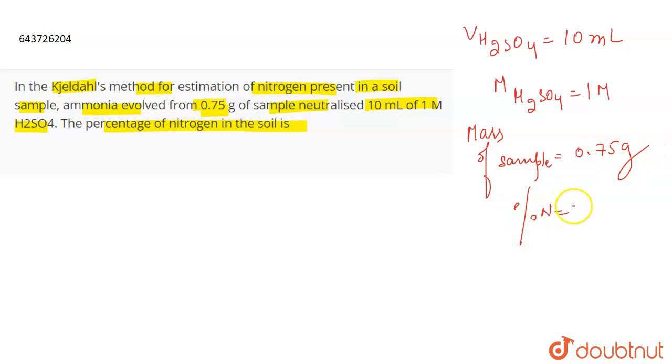Now the formula that we have for the calculation of percentage of nitrogen is 1.4 times normality of H2SO4 times volume of H2SO4 divided by the mass of the sample.